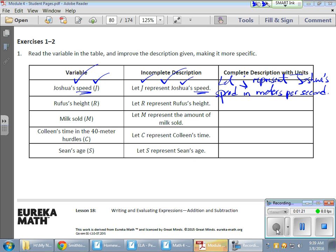And speed is a rate, so we need to have meters per second. We need to have a comparison there, some type of ratio. In height, we have Rufus's height. R is going to represent Rufus's height. Now, what is height measured in? Well, we can have height being measured in inches or feet or whatever.